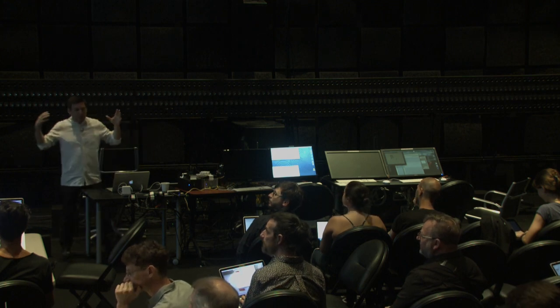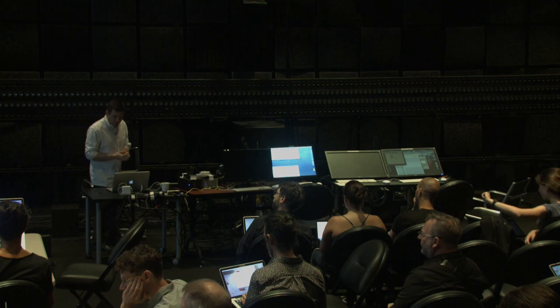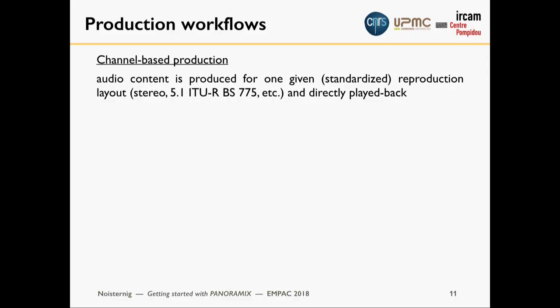This brings us to a variety of production workflows. One is channel-based production: you produce for a given format like 5.1 or 7.1. You know at production time where your loudspeakers will be because it's a standardized format. When you produce for 5.1 — center, left, right, left surround, right surround at 0°, ±30°, ±110° — if somebody is not using this configuration, it's the problem of the user to make sure the configuration is properly set up.